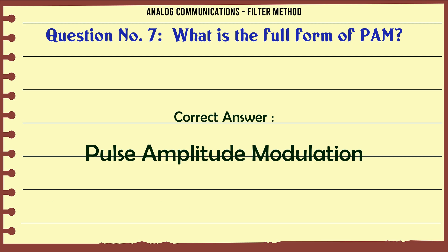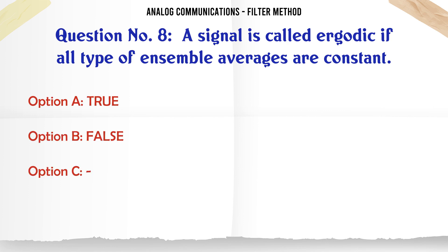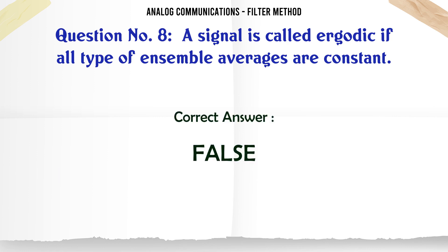A signal is called ergodic if all types of ensemble averages are constant. a) True. b) False. The correct answer is: False.